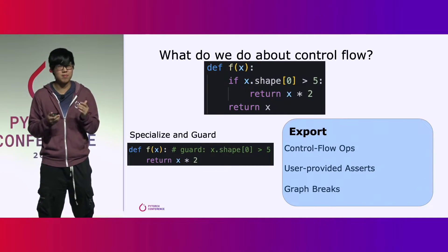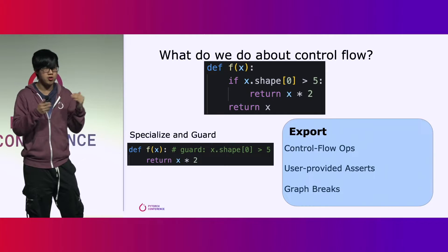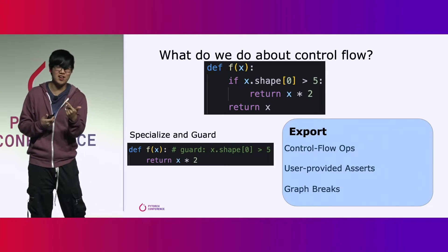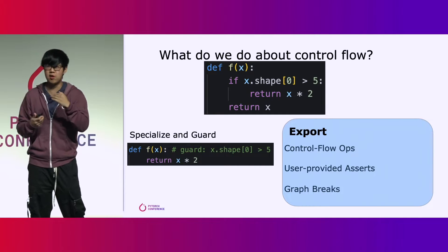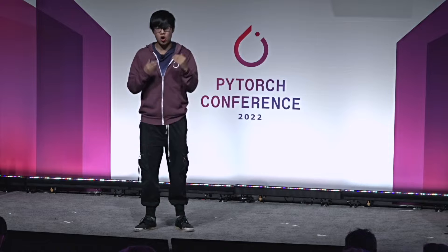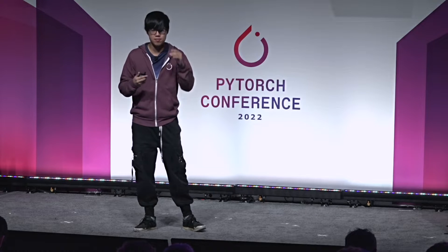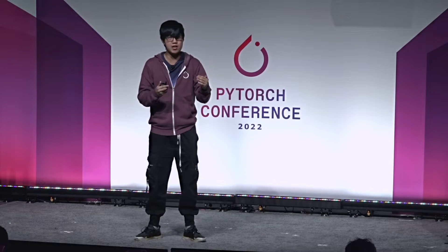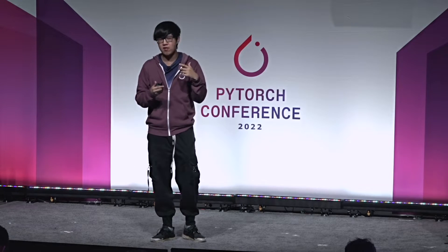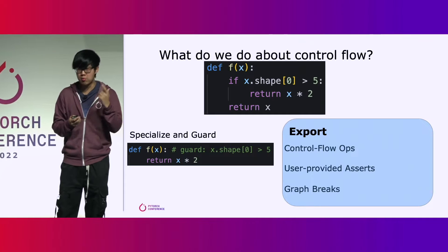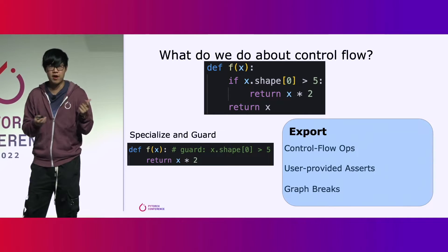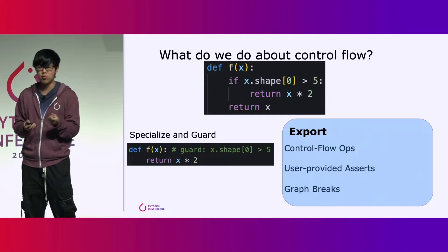In our sample program, when we encounter control flow — say, if shape zero is more than five — we peek at the underlying shape, see that we go down the first branch where the shape is more than five, and then we guard on the branch we went down symbolically. At the bottom, you can see a graph that just has a multiply in it without any control flow, along with a precondition on what cases are required for this graph to be correct. Because we've propagated shapes through our program, these guards are evaluatable without needing to rerun our graph. When we see a new tensor whose shape is less than or equal to five, we know the graph is no longer correct and we need to retrace and recompile.